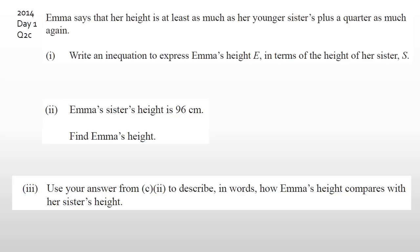With this question, what people generally tend to do is look at the equation and put E for Emma's age, S for her younger sister's age — so as much as her sister plus a quarter as much again. But the common mistake I'm seeing is putting an equals sign. It's really important you understand this word: 'at least.' If it says 'at least,' you can't have equals — it needs to be greater than or equal to.